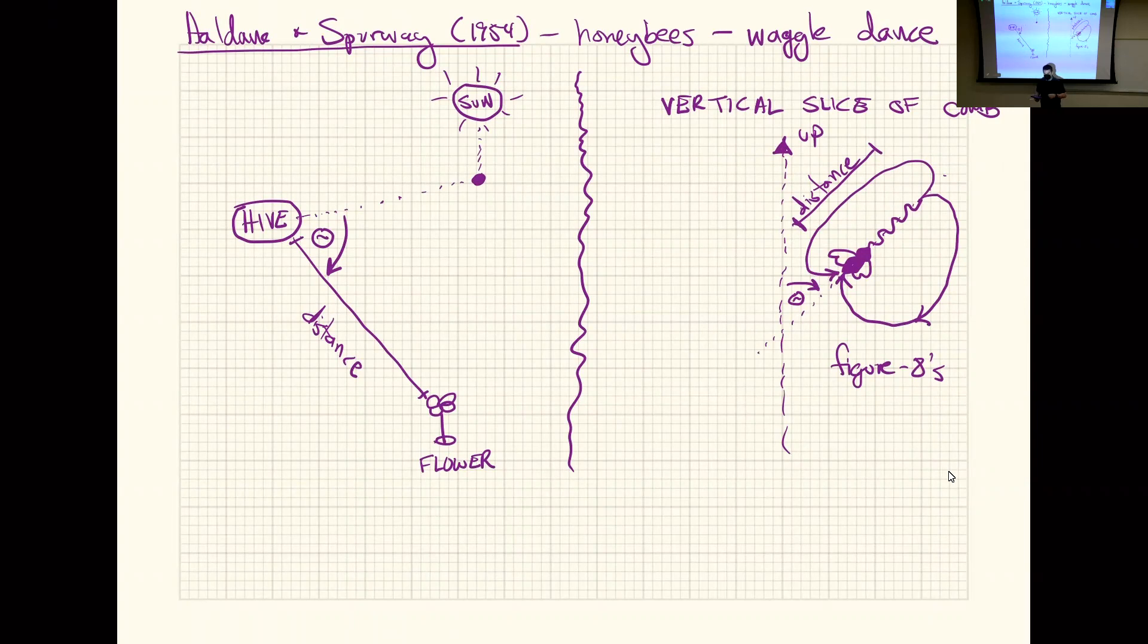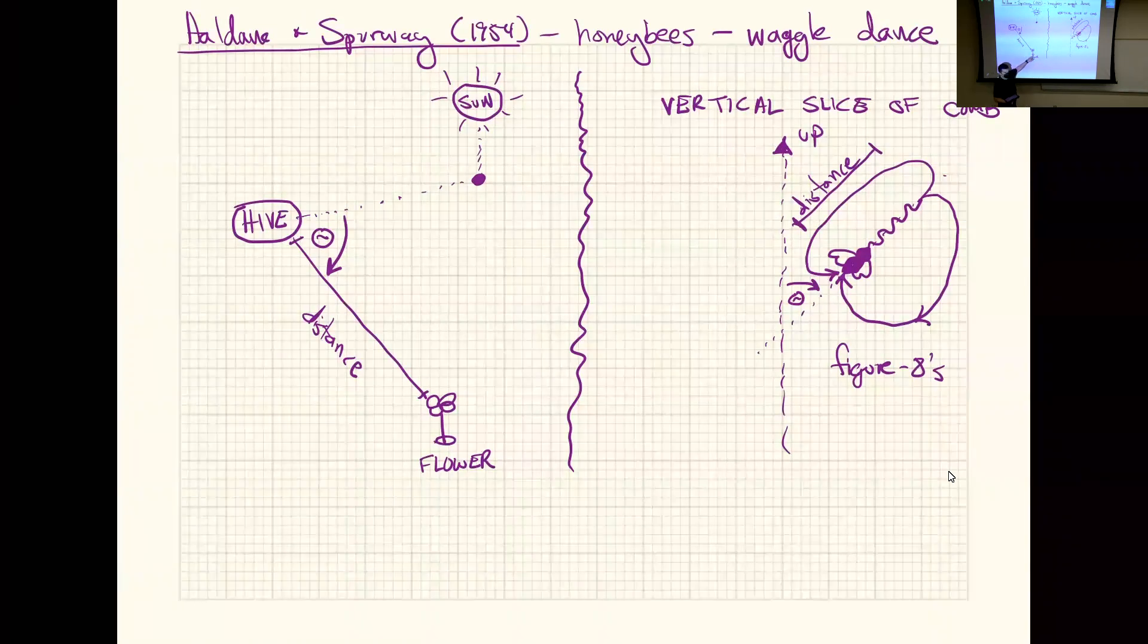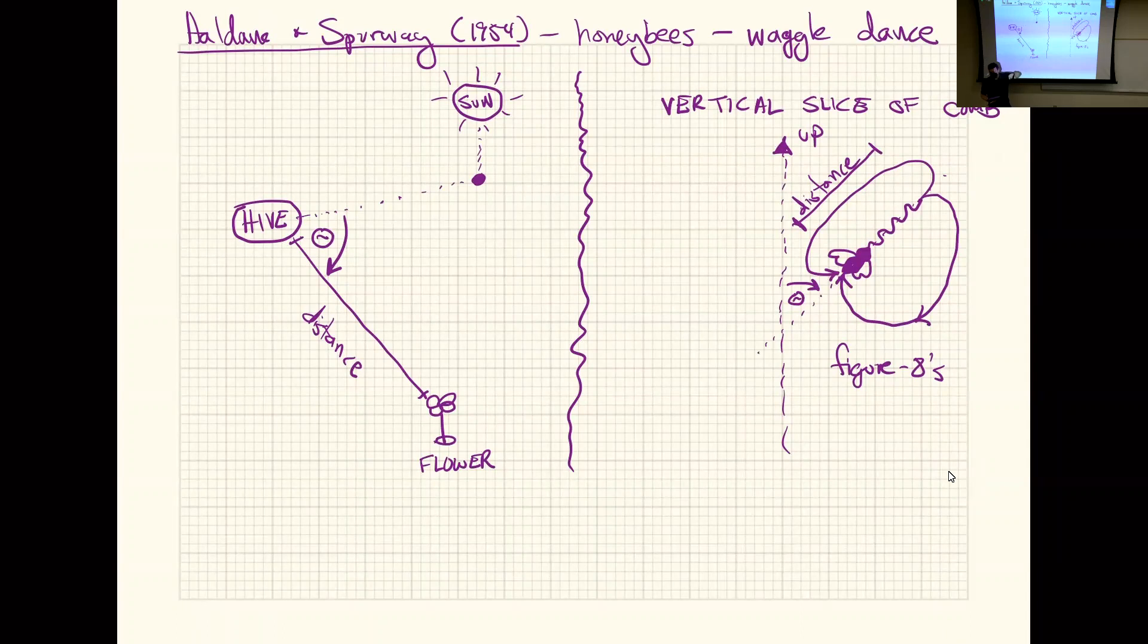The angle for the sun, how does that work if the sun is moving? They compensate. She might be dancing for this flower for a relatively long period of time. As the sun moves in the sky, she updates her angle.